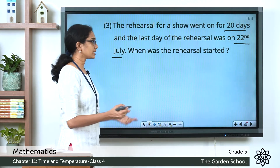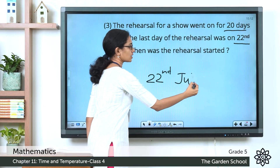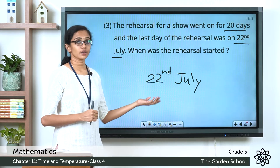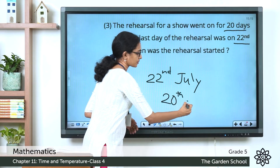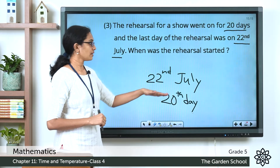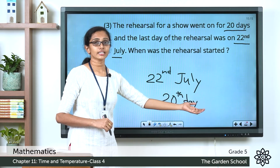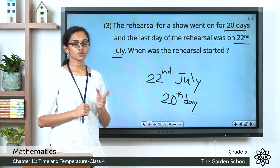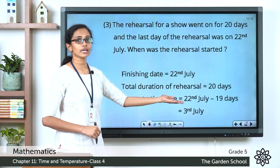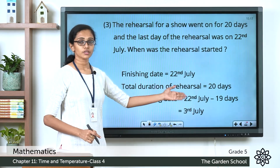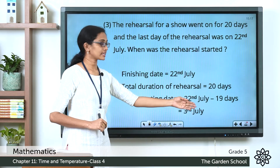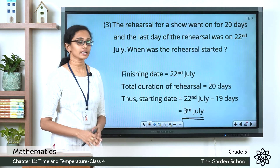The rehearsal ended on 22nd July, so there was rehearsal on that day also. The rehearsal lasted for 20 days in total, so the 22nd of July is the 20th day of the rehearsal. To find out on which day it started, we subtract 19 days from 22nd July. We exclude the 20th day, so the rehearsal started 19 days before the 22nd of July. The finishing date is 22nd July, total duration is 20 days, so the starting date equals 22nd July minus 19 days, which gives 3rd July.